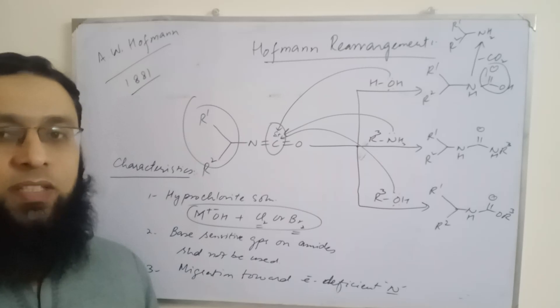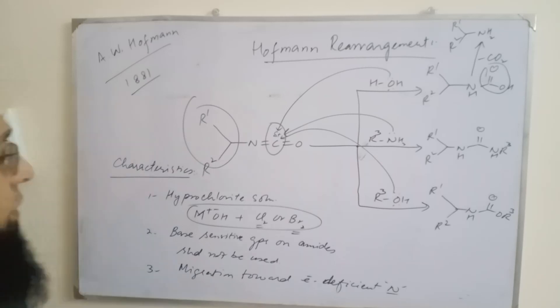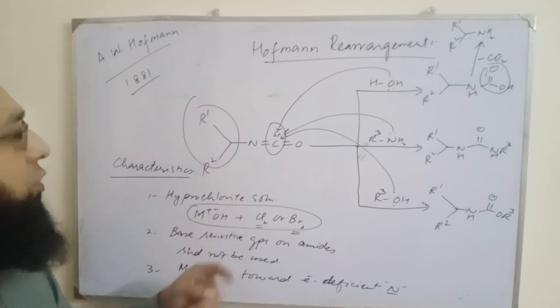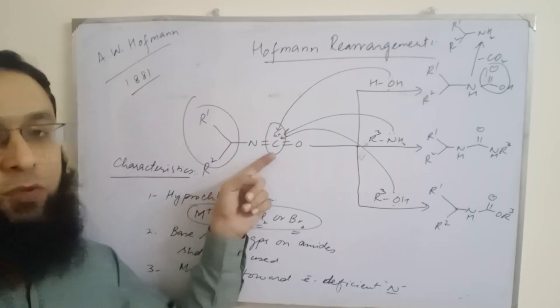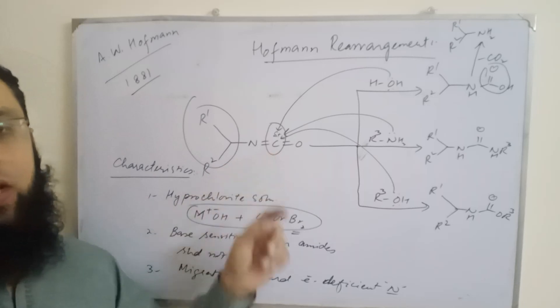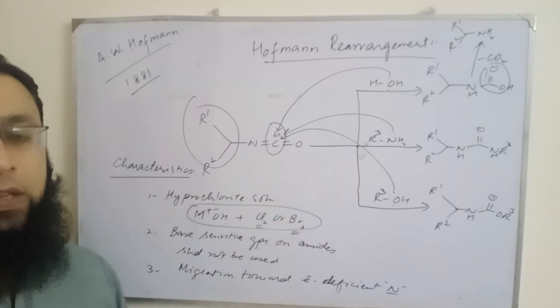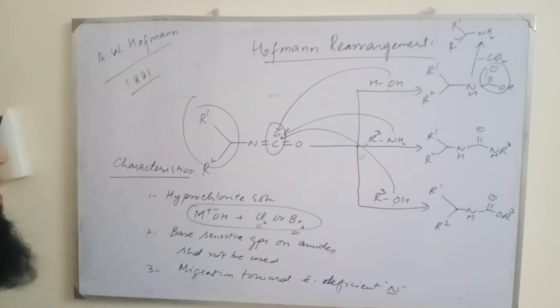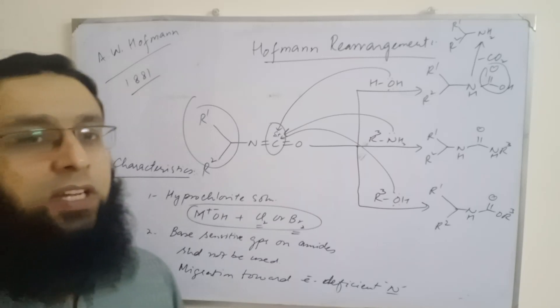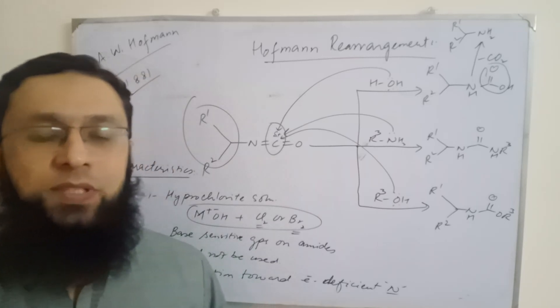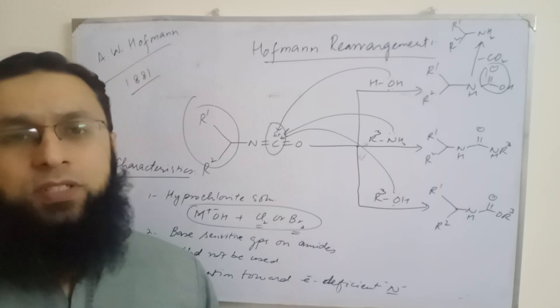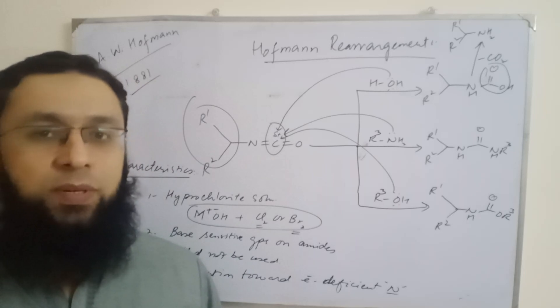Complete retention of configuration during this rearrangement takes place. Moreover, the isocyanate which is formed during the reaction is not isolated; rather, it is reacted in situ because it is very unstable. These were the features or characteristics of Hoffmann rearrangement. I hope you have clearly understood all these concepts, but if you find any question or confusion, you can leave your comments in the comment box. Thanks.